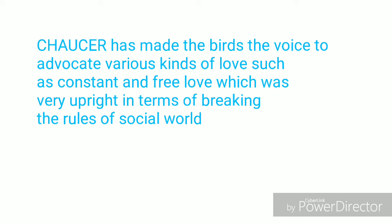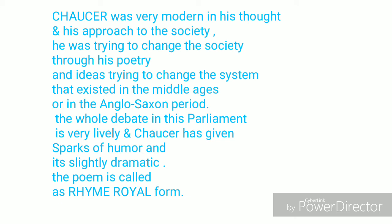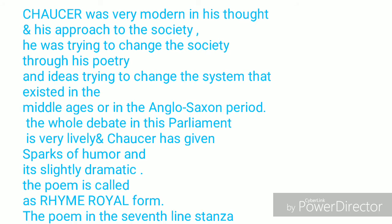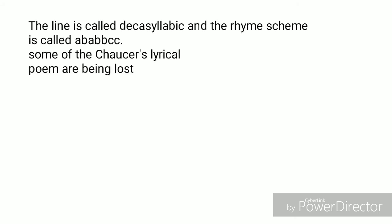It was during Chaucer's time breaking the rules of the social world, and he was very modern in his thought and approach towards society — trying to change the society through his poetry and ideas, trying to beat the old customs and traditions of the Middle Ages. The whole debate in this Parliament of Fowls is very lively, with sparks of humour and a slightly dramatic quality. The poem has the rhyme royal form — a seventh-line stanza with decasyllabic lines and the rhyme scheme ABABBCC.